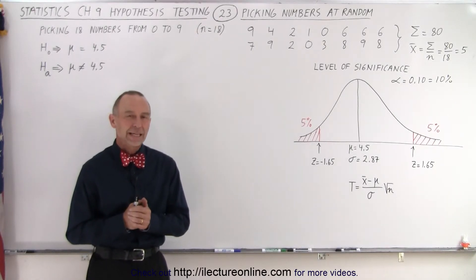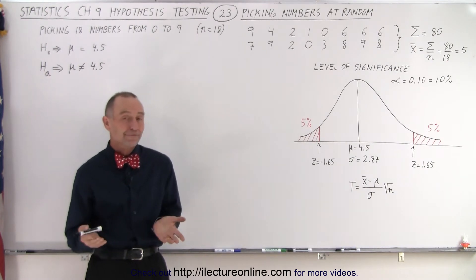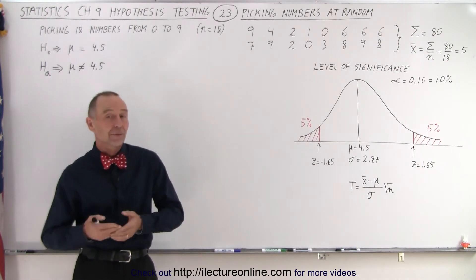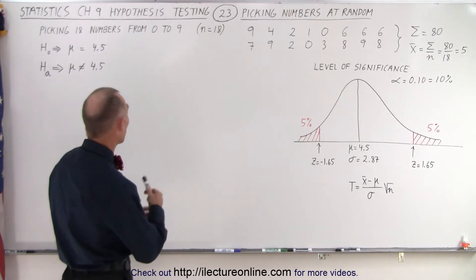Welcome to our lecture online. If we pick a whole bunch of numbers at random from zero to nine, the average of all the numbers picked is going to be four and a half.